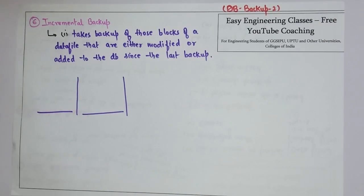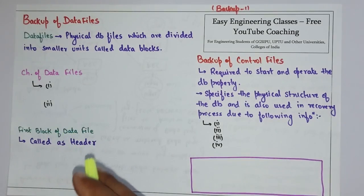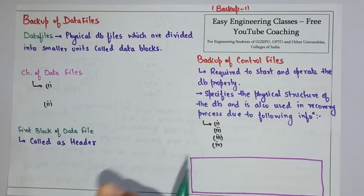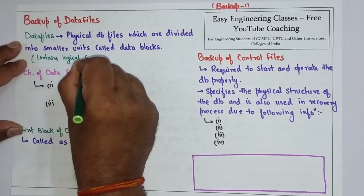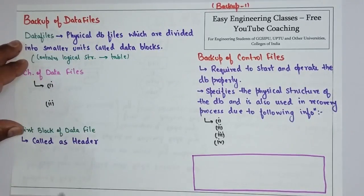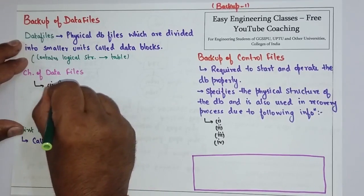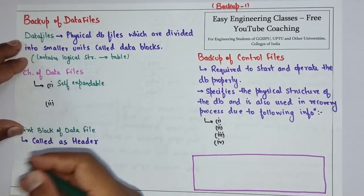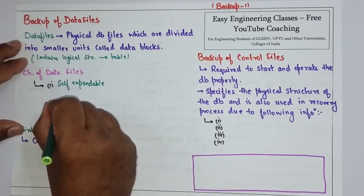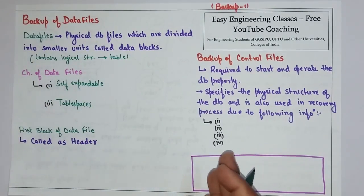Now we will see about backup of data files and control files. We need to understand why the backup of these two particular files is important. Data files are the physical database files which are divided into smaller units called data blocks, and they contain the logical structure such as tables. The size of data files extends as the database runs out of space, so we can say they are self-expandable. Physical data files create table spaces, which are logical units of database storage.